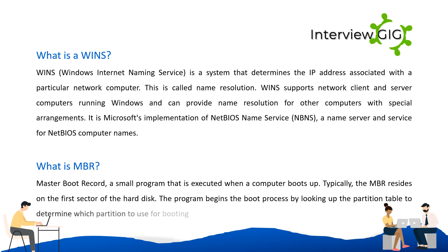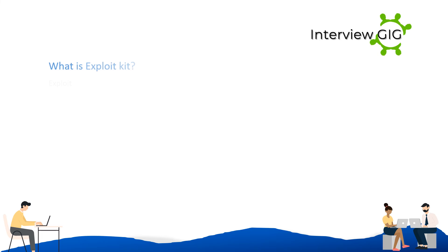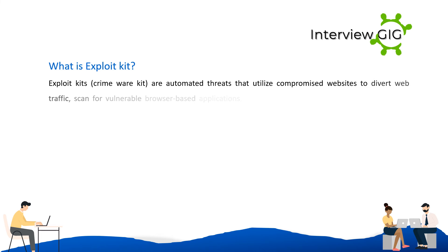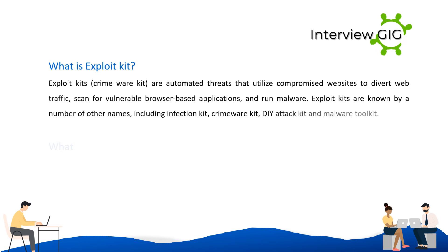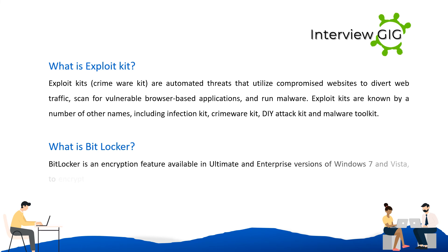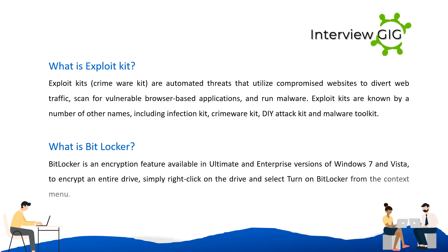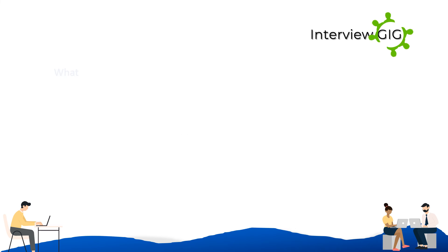What is MBR? The Master Boot Record (MBR) is a small program executed when a computer boots up, typically residing on the first sector of the hard disk. It begins the boot process by looking up the partition table to determine which partition to use for booting. What is an exploit kit? Exploit kits, also known as crimeware kits, are automated threats that utilize compromised websites to divert web traffic, scan for vulnerable browser-based applications, and run malware. What is BitLocker? BitLocker is an encryption feature available in Ultimate and Enterprise versions of Windows 7 and Vista to encrypt an entire drive.